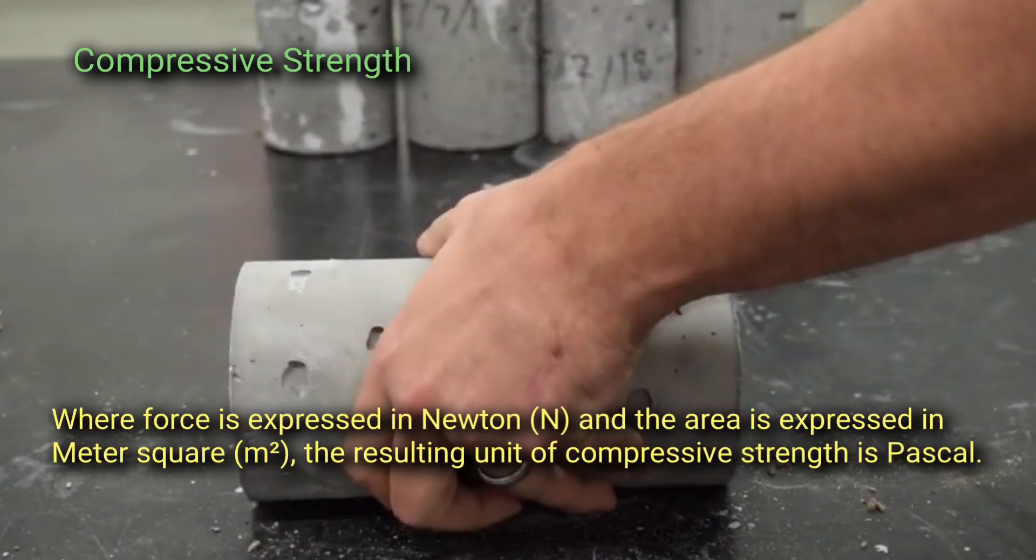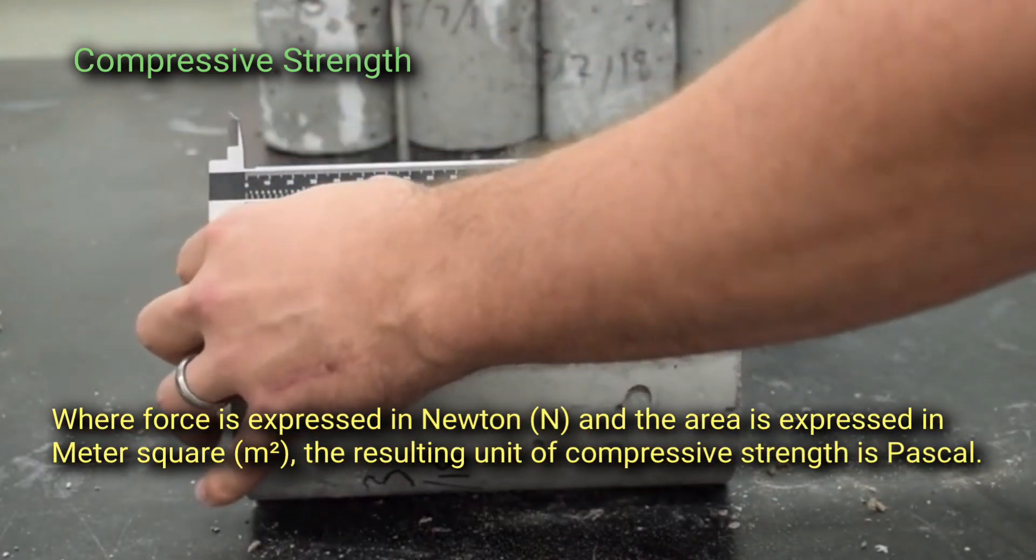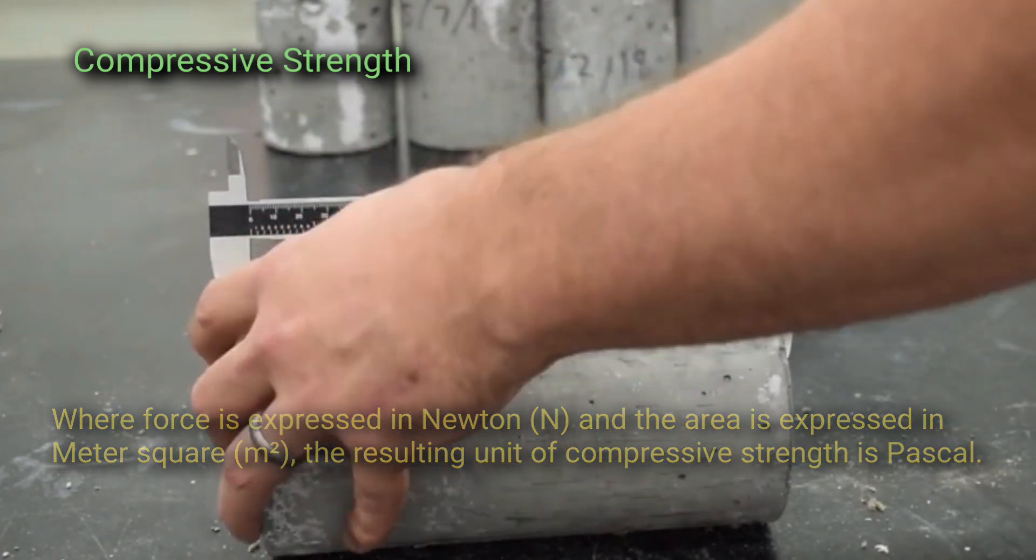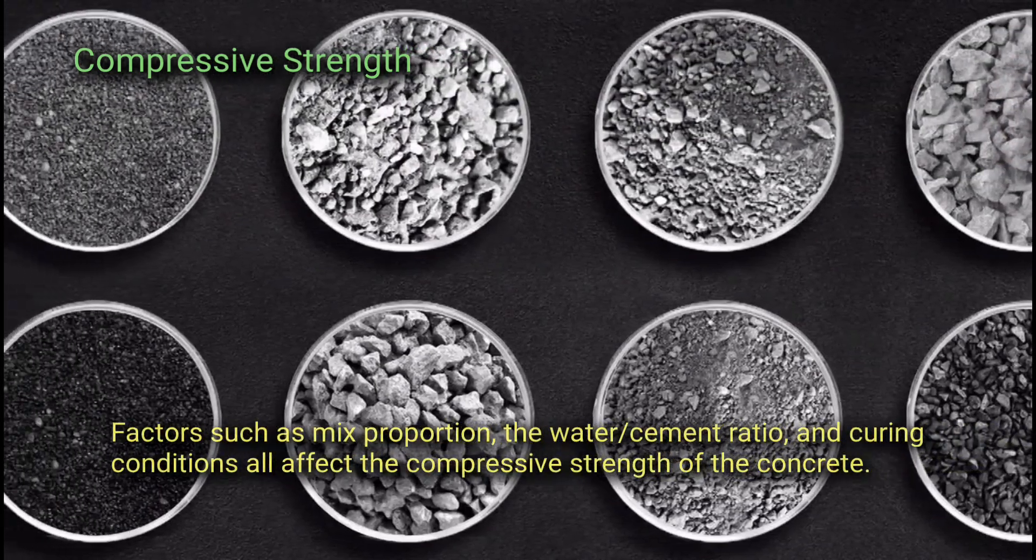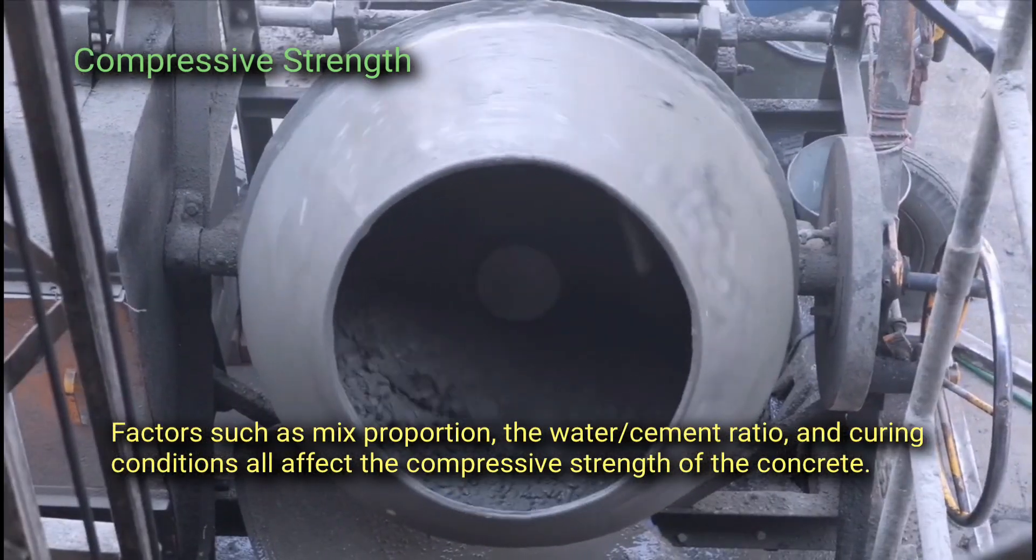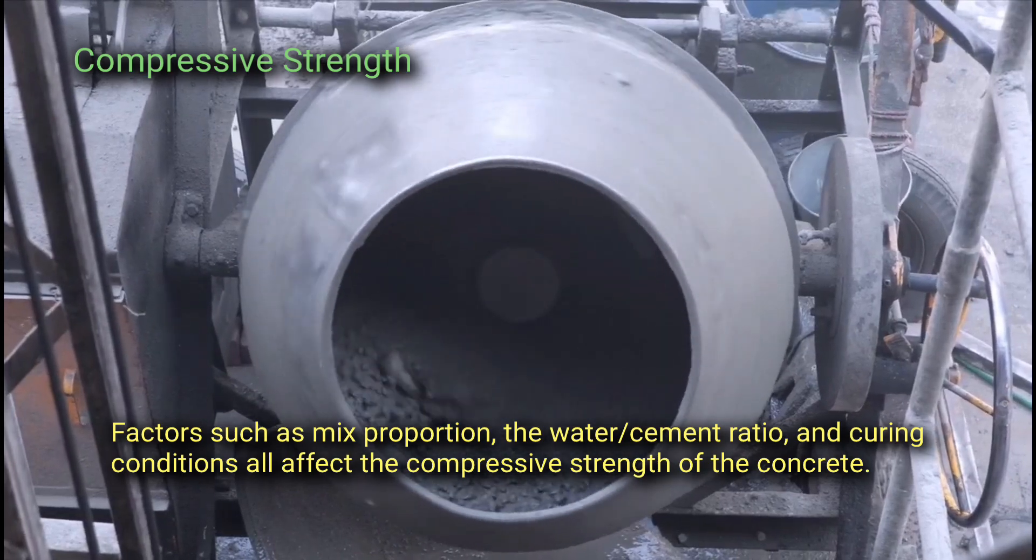Where force is expressed in Newton and the area is expressed in meters square. The resulting unit of compressive strength is Pascal. Factors such as mix proportion, the water cement ratio, and curing conditions all affect the compressive strength of the concrete.